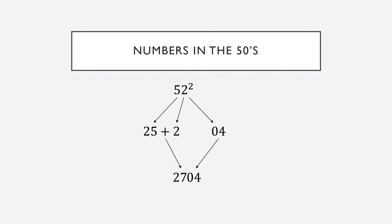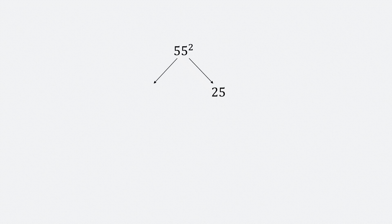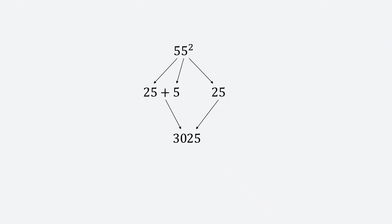Let's try another one — 55 squared. Once again, I take the last digit and square it. So, that's 25. Take the first digit, square it — that's also 25. Now, add the last digit to that square. So, 25 plus 5. The last two digits will be 25 and the first two will be 25 plus 5, that's 30. So, 55 squared is 3025.